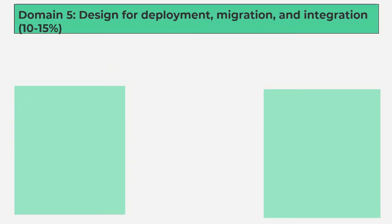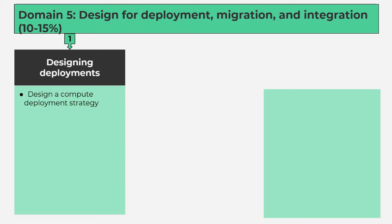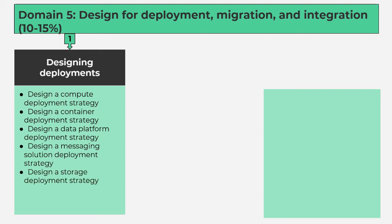Domain 5: Design for Deployment, Migration and Integration, 10-15%. Number 1, Designing Deployments contains 6 subtopics: design a compute deployment strategy; design a container deployment strategy; design a data platform deployment strategy; design a messaging solution deployment strategy; design a storage deployment strategy; design a web app and service deployment strategy.